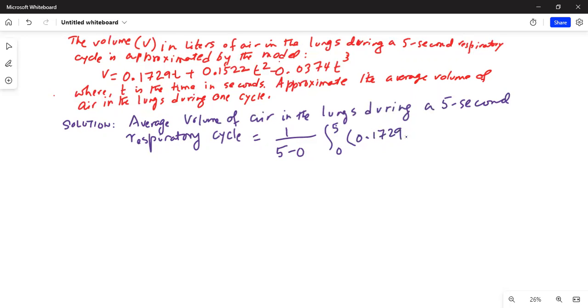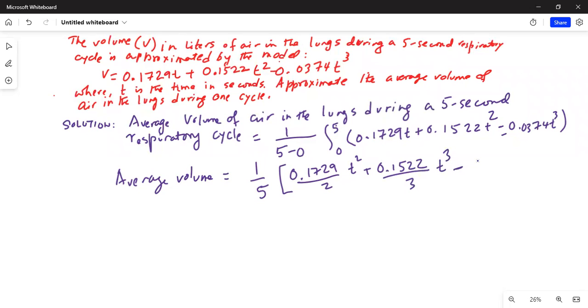0.1729t plus 0.1522t square minus 0.0374t cubed. So average volume is equal to one over five. And then we'll do the integration 0.1729 by two times t square plus 0.1522 divided by three t cubed minus 0.0374 by four t to the power of four. And the limits of integration are from zero to five.